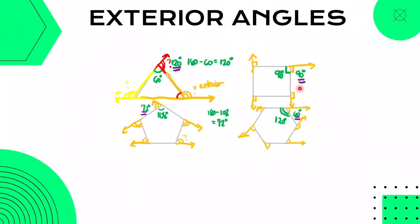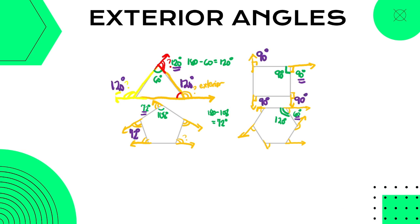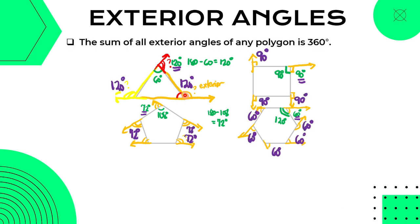Here we have the same figures — regular polygons — which means all of the interior angles have equal measures. Kung equal lahat ng interior angles nila, that means equal din ang kanilang mga exterior angles. So here, the sum of all exterior angles of any polygon is equal to 360 degrees.